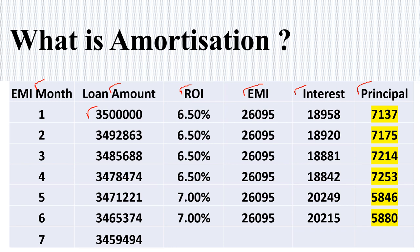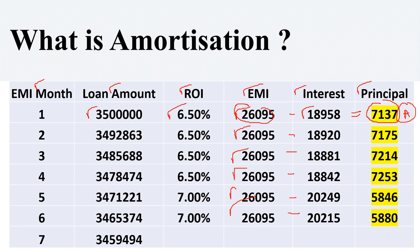I am assuming that Mr. X has availed a loan of Rs. 35 lakh at 6.5% rate of interest with the EMI being Rs. 26,095. Out of this EMI, the interest is recovered first and the remaining amount of Rs. 7,137 is credited towards the principal. This monthly payment towards principal is technically called amortization.